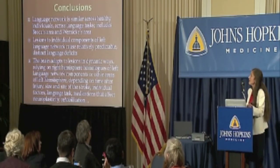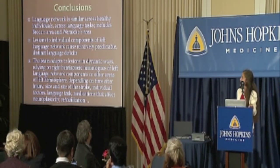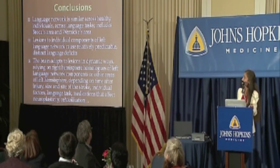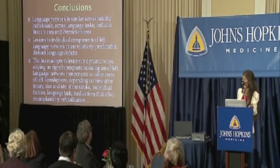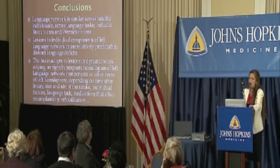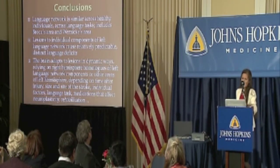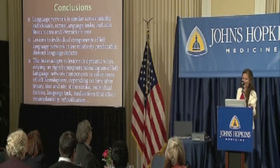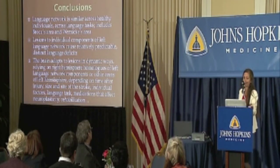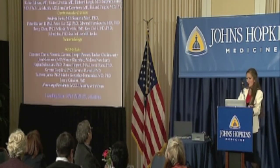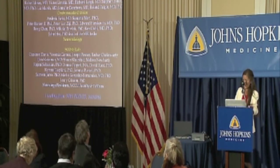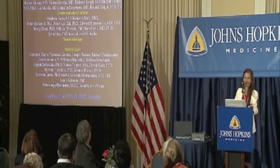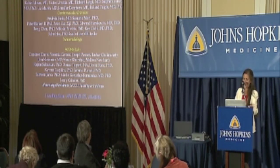In conclusion: the language network is similar across healthy individuals and across language tasks, including Broca's area and Wernicke's area. Lesions to individual components of the left language network cause relatively predictable, distinct language deficits. The brain adapts to these lesions in different ways depending on the size and site of the stroke, time post-onset, individual factors including the language task, medications affecting neuroplasticity, and even rehabilitation. This research has taken a team, and I'm appreciative of funding from the NIH. Thank you.